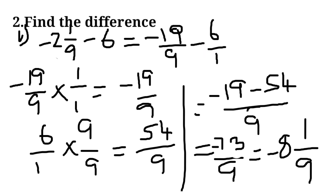Find the difference: minus 2 and 1 by 9 minus 6. The mixed fraction is converted. Here LCM is 9 and we get minus 73 by 9 minus 81 by 9.